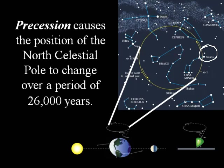Polaris happens to be very close to the celestial pole right now and is our north star. When the Egyptian pyramids were being built, Thuban was near the north celestial pole. But at other times in the past, we had no north star.